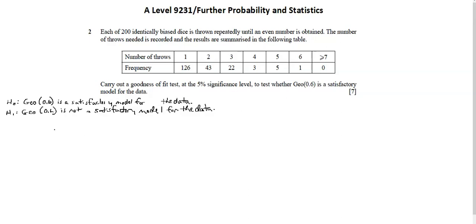We're going to use the geometric distribution to estimate our expected frequencies based on number of throws. So I'll set up a table with my number of throws from 1 to 7.